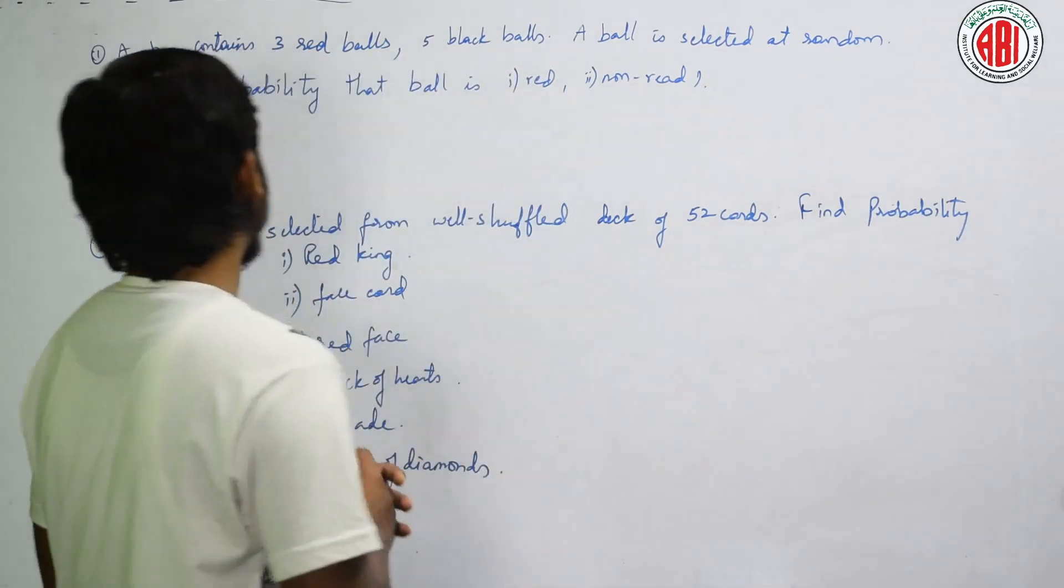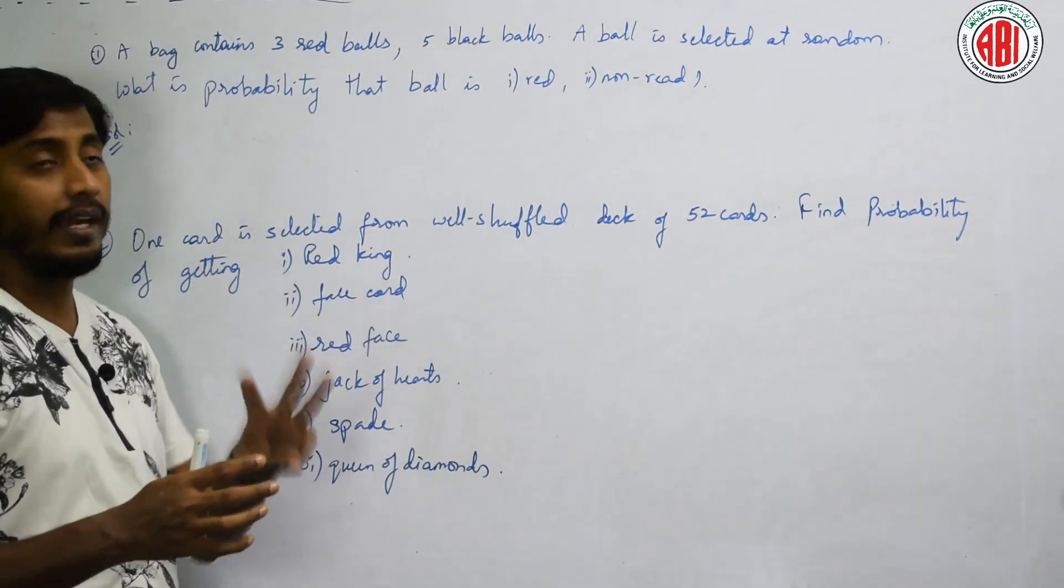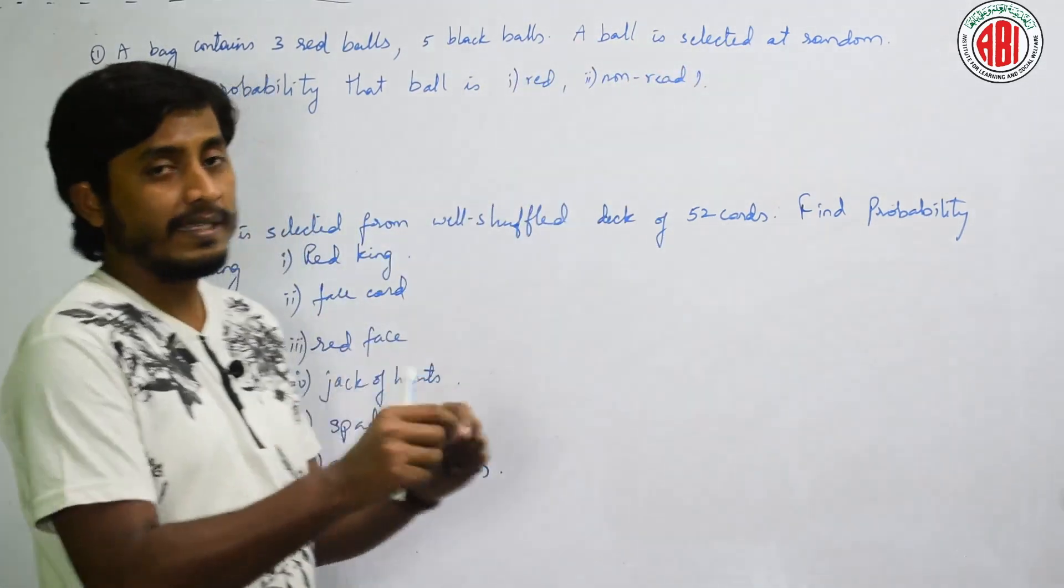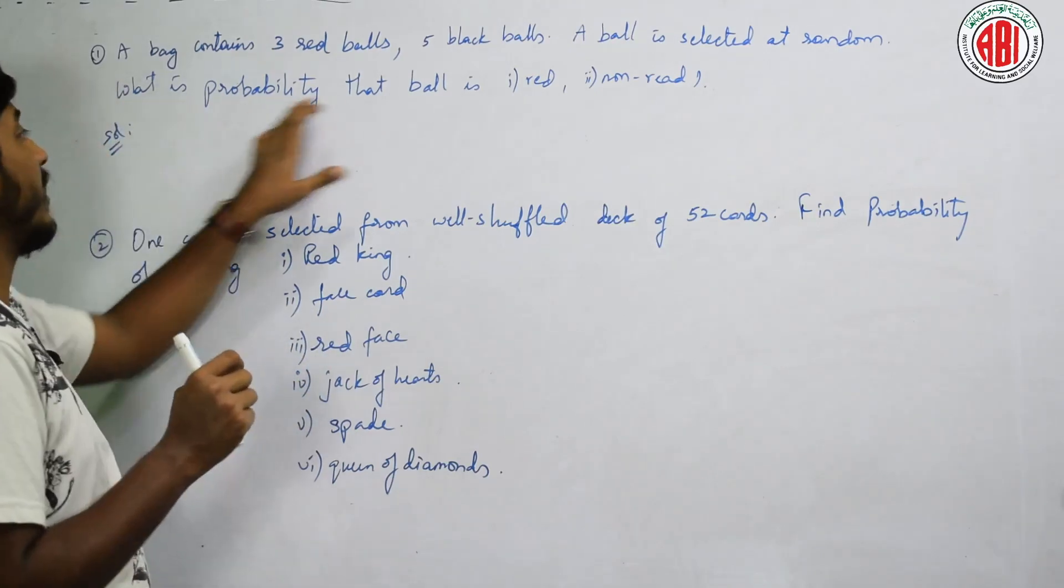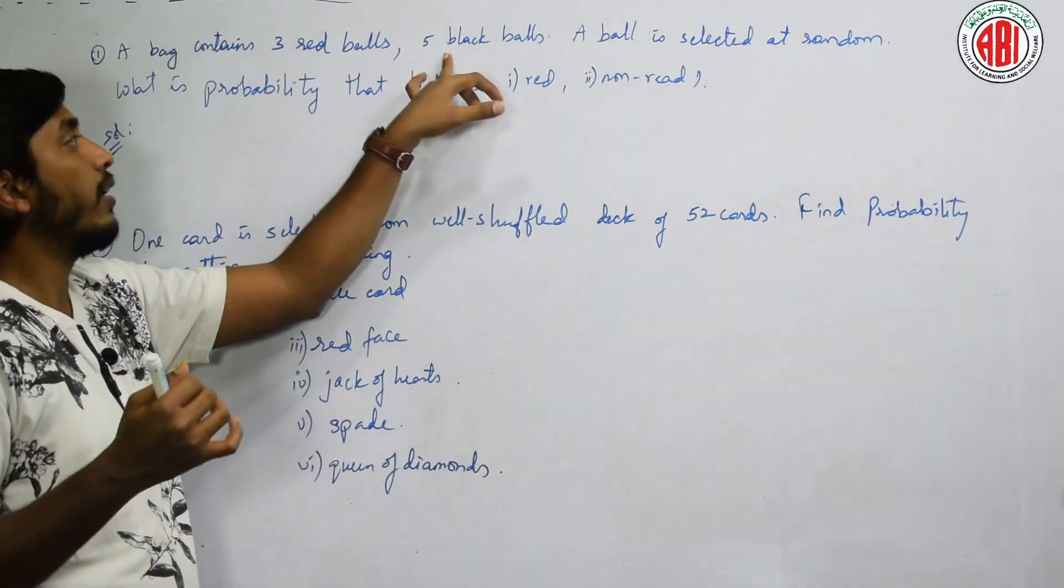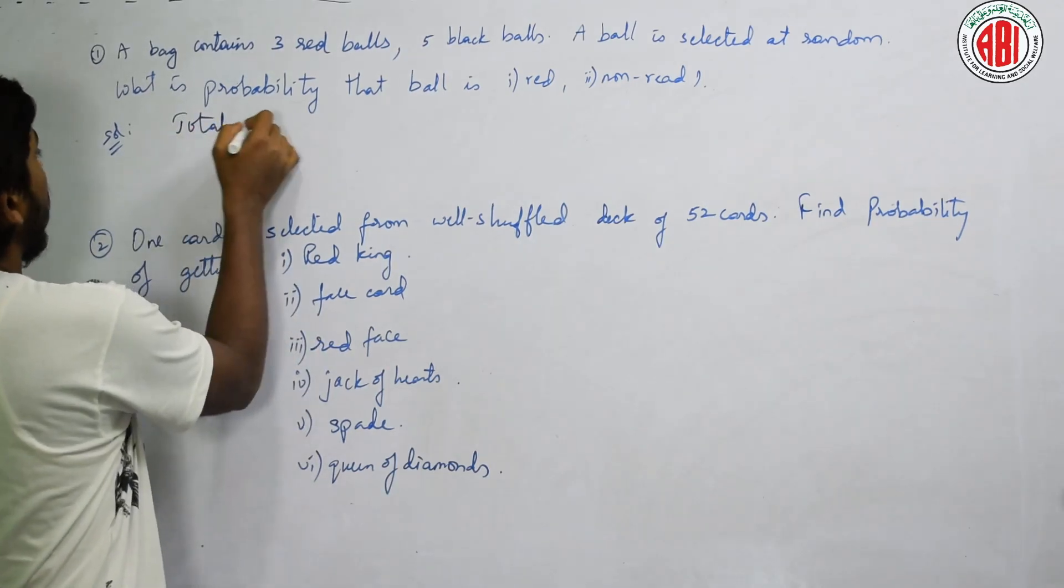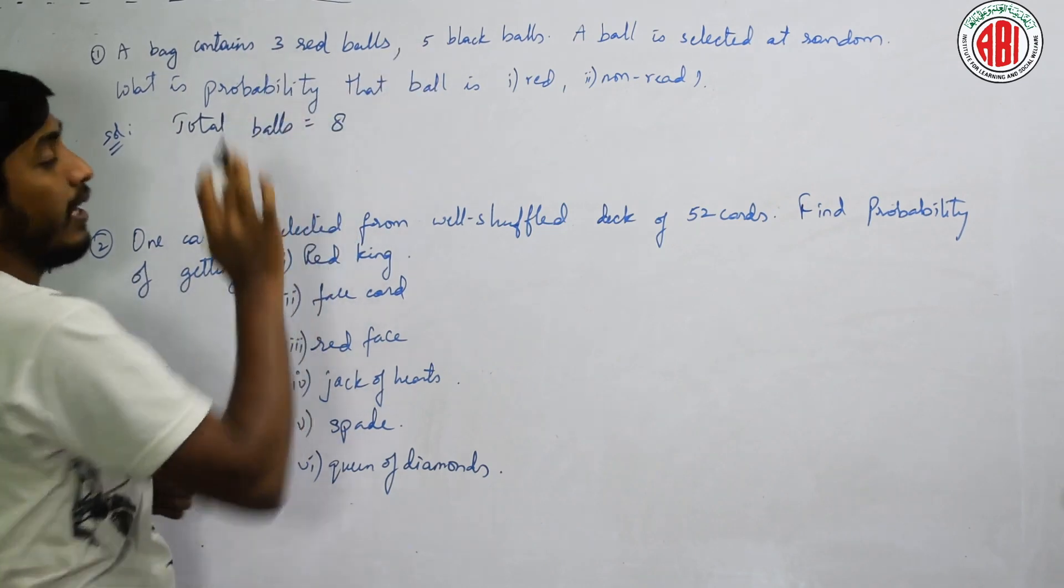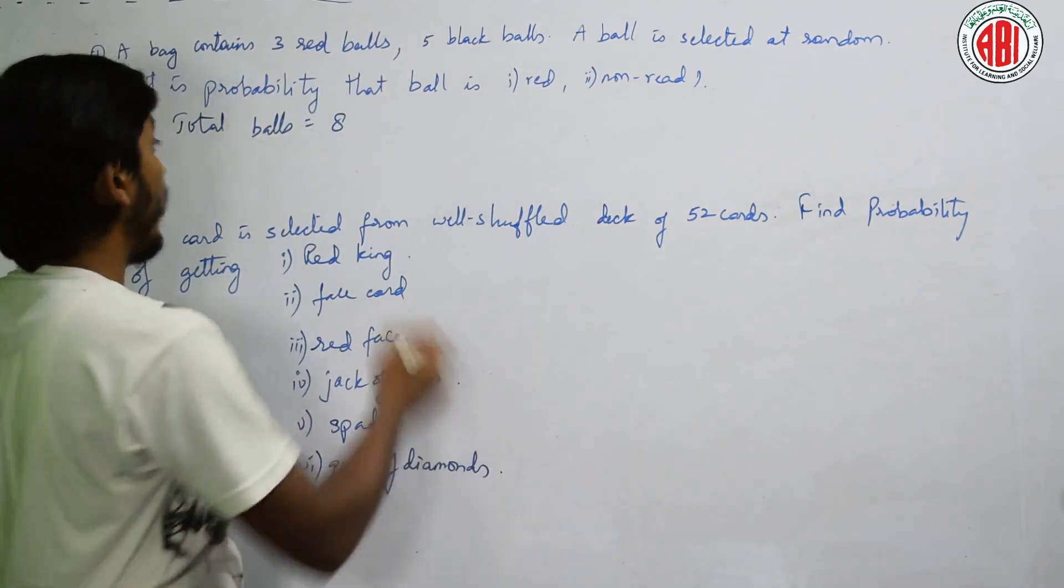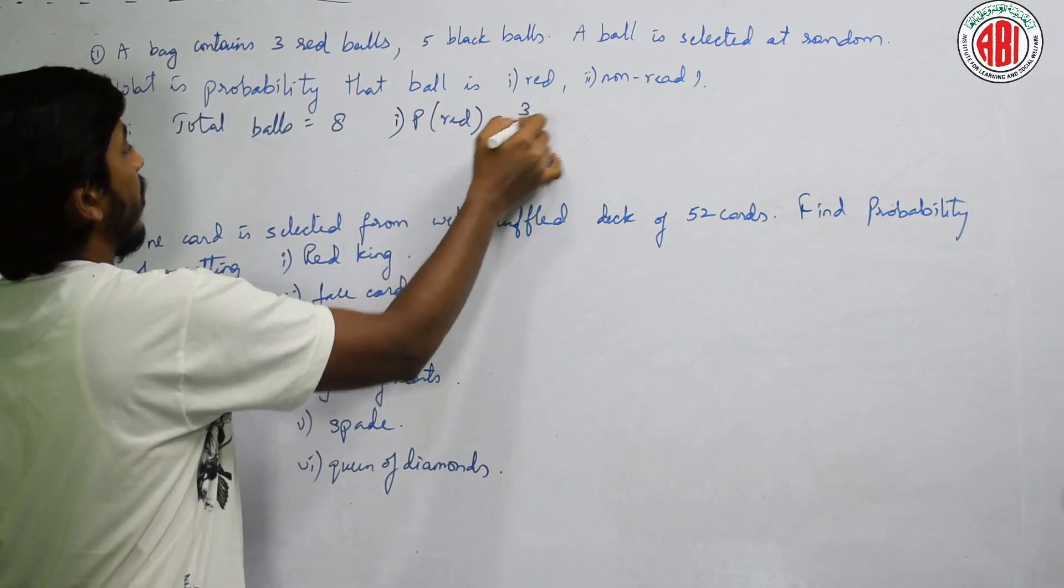See here, what's the question given? A bag contains 3 red balls, 5 black balls. A ball is selected at random. What is the probability that the ball is red and nonred? Either red balls are 3, black balls are 5. Therefore, total balls is equal to 5 plus 3, 8 balls.